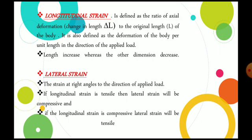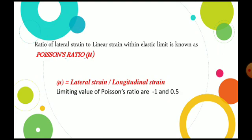Lateral strain is the strain at right angles to the direction of the applied load. So lateral strain divided by longitudinal strain gives Poisson's ratio.